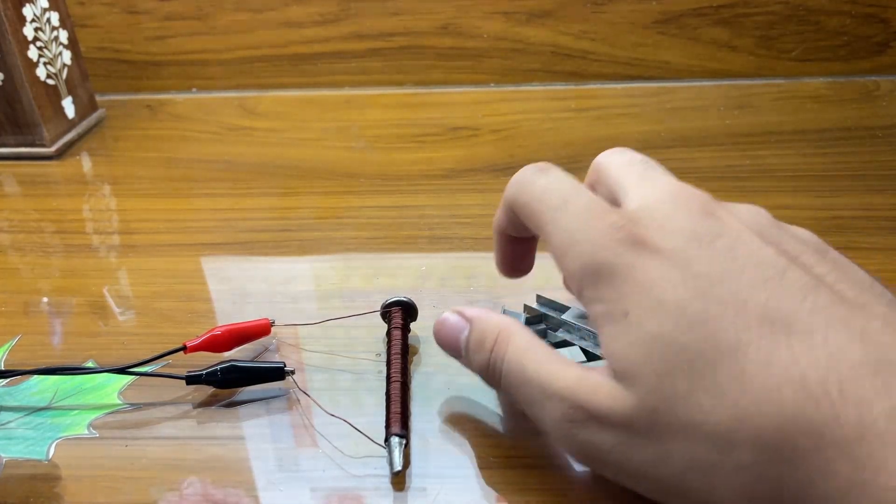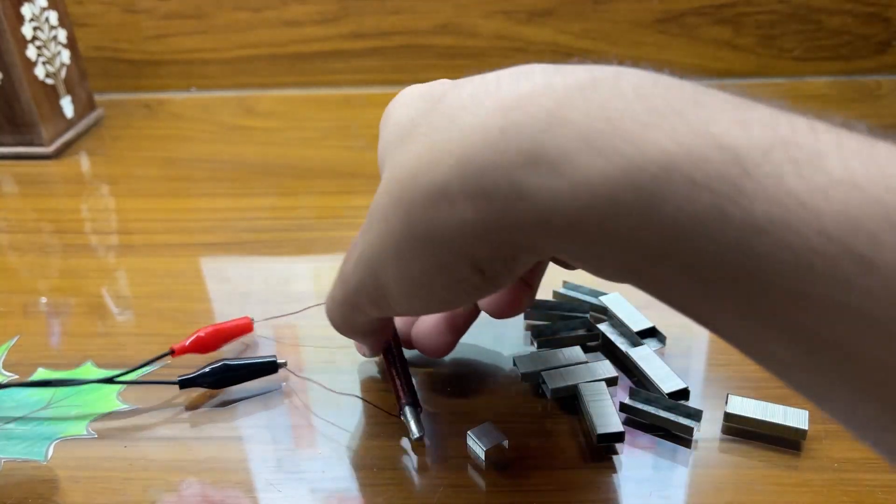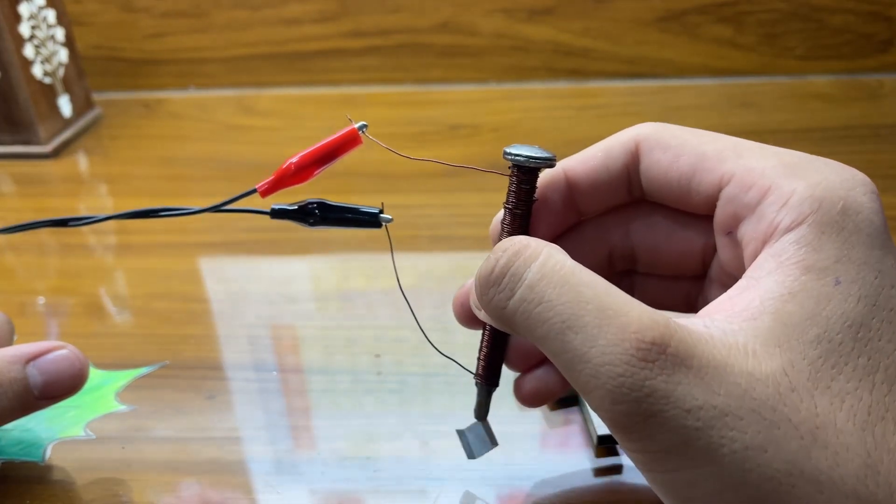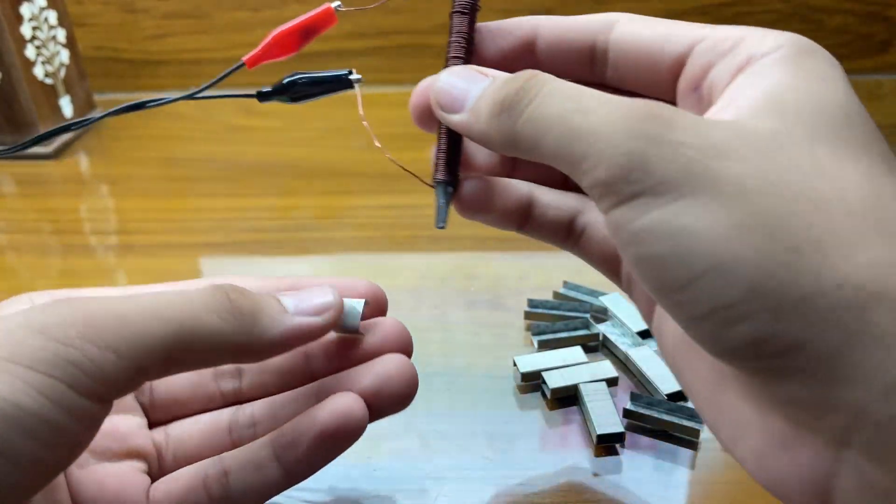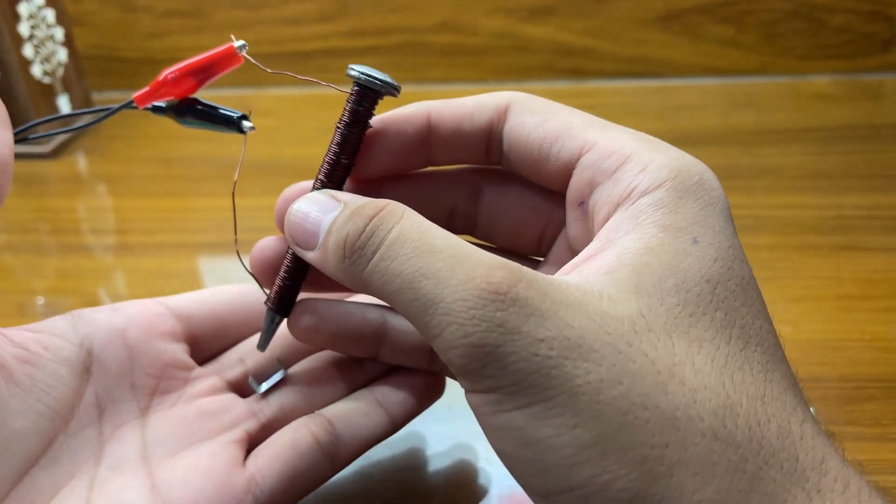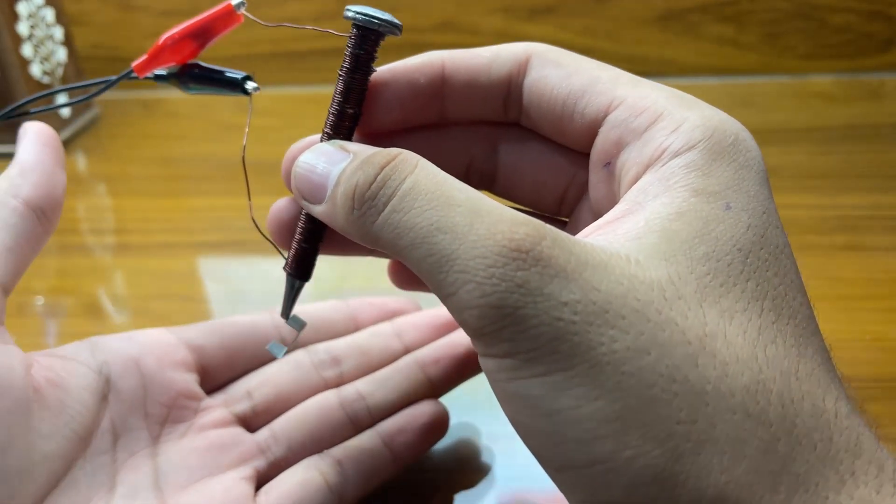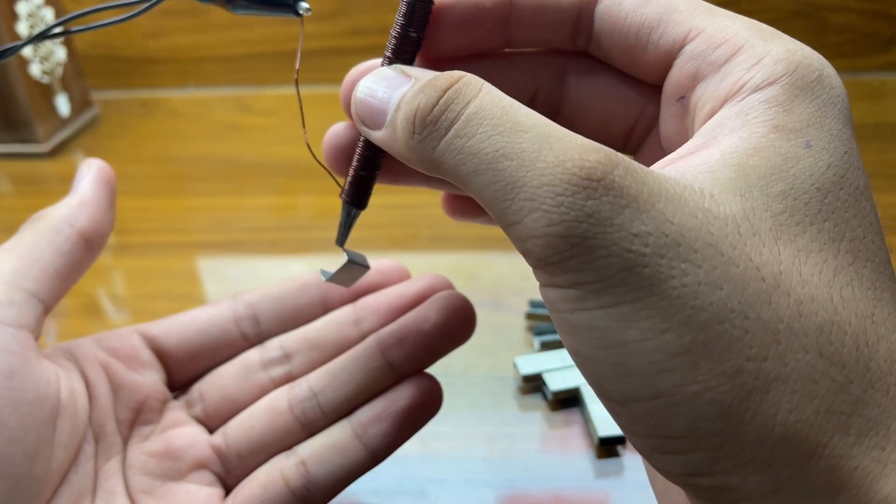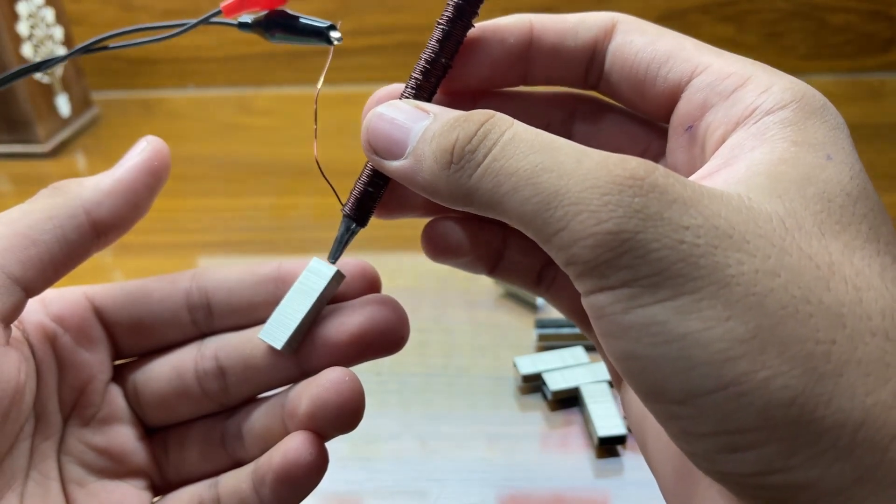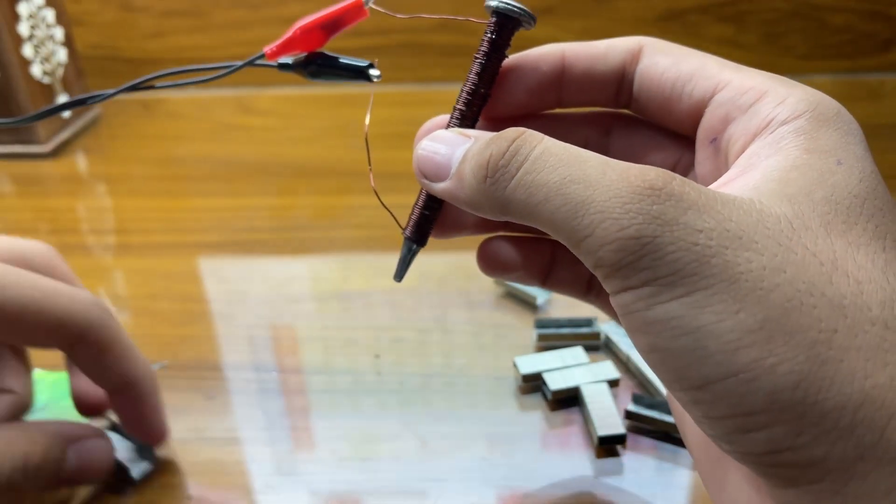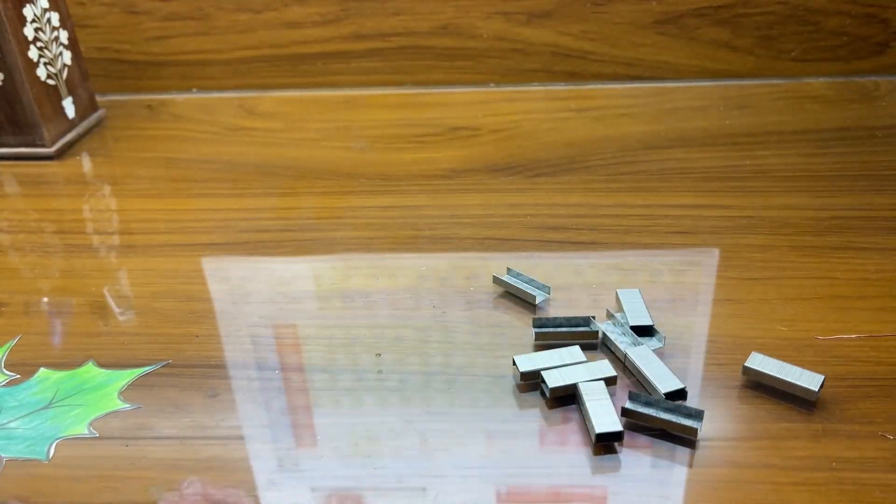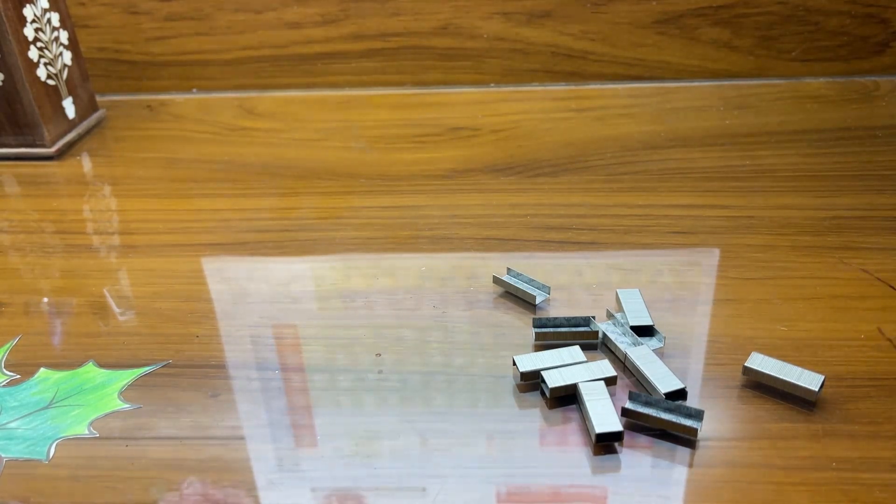Now we're running current through our electromagnet, so it's turned on and shows some electromagnetic properties. If we try to lift off this stapler pin it can lift it off, but it can barely just lift off this small pin, just barely hold it up. I'm sure it won't be able to lift this up - yeah, it can't.